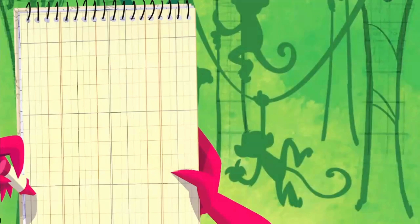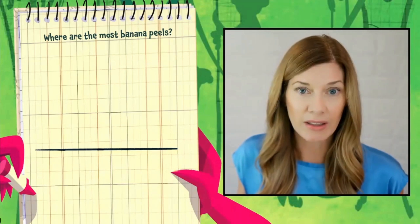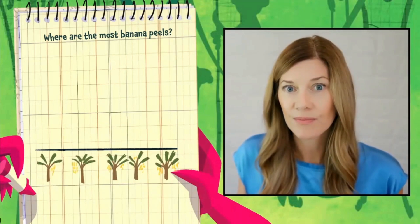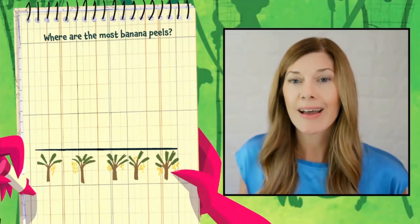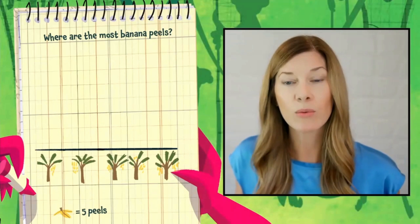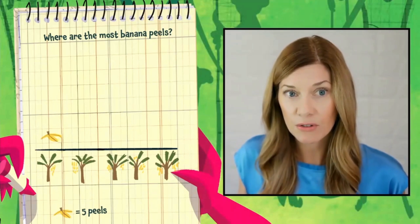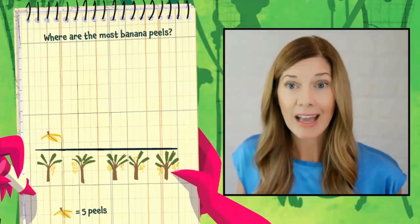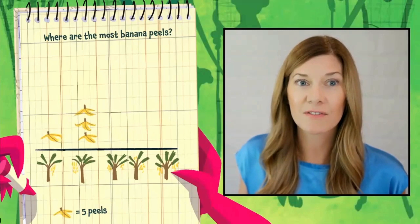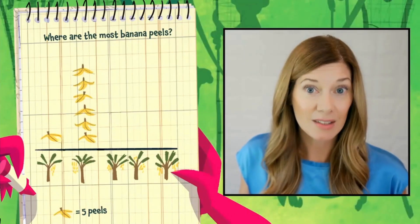Then she drew the data. The question she wanted to answer was: where are the most banana peels? She drew a line for the x-axis, then drew each tree. There were a lot of peels on the ground, so rather than draw every single one, she made a key. One banana peel drawing would stand for five actual banana peels. There were five peels under the first tree — that's one banana peel drawing. The second tree had 30 peels underneath it: 5, 10, 15, 20, 25, 30 banana peels — six banana peel drawings.